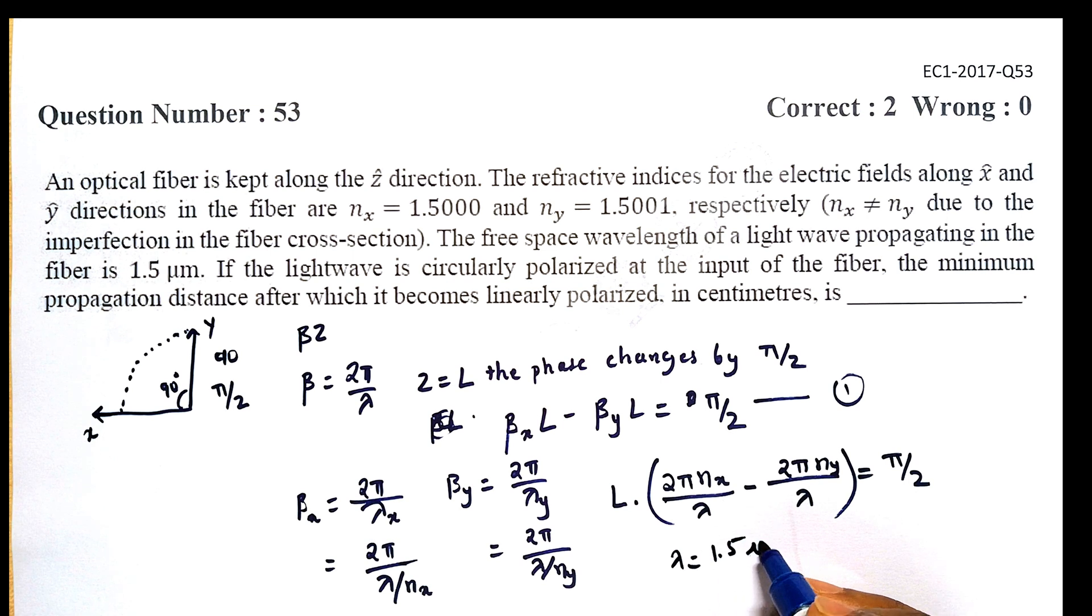And we get a value of L = 0.37 centimeter. So at a distance of 0.37 centimeters, this circularly polarized wave becomes a linearly polarized wave.